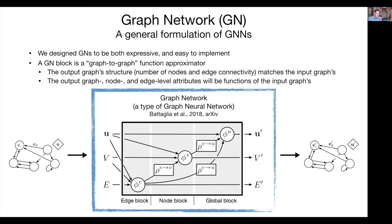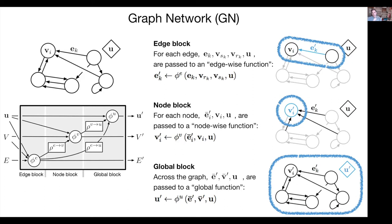The specific type I'll discuss is what my group calls graph networks, which can be seen as a generalization of other approaches. The graph network processes an input graph using learned message passing. There's a neural network function applied to every neighborhood: for each pair of nodes connected by an edge, this function — called phi_e — takes as input the edge attributes e_k, the attributes of the two connected nodes, and possibly some global property, and predicts a new property for that edge.